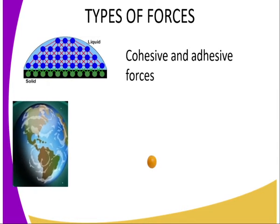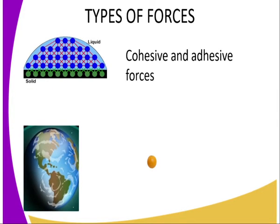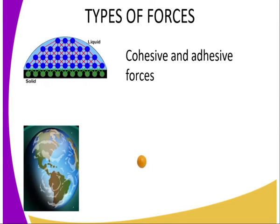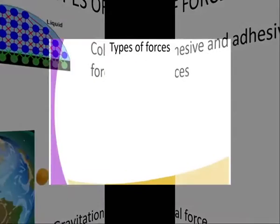Force number two: we have gravitational force — the force of attraction between two bodies of mass m1 and m2. For instance, we have the gravitational force of the earth which tends to pull bodies on or near the surface of the earth towards its center. That is what we refer to as gravitational force.